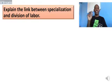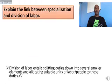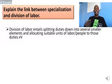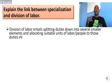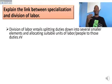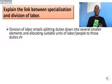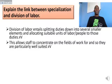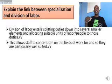The first question is asking you to explain the link between specialization and division of labor. Division of labor entails splitting duties into several smaller elements and allocating suitable units of labor — or people — to those duties, specifying how many people are going to be working at a particular job. You get two marks for that.